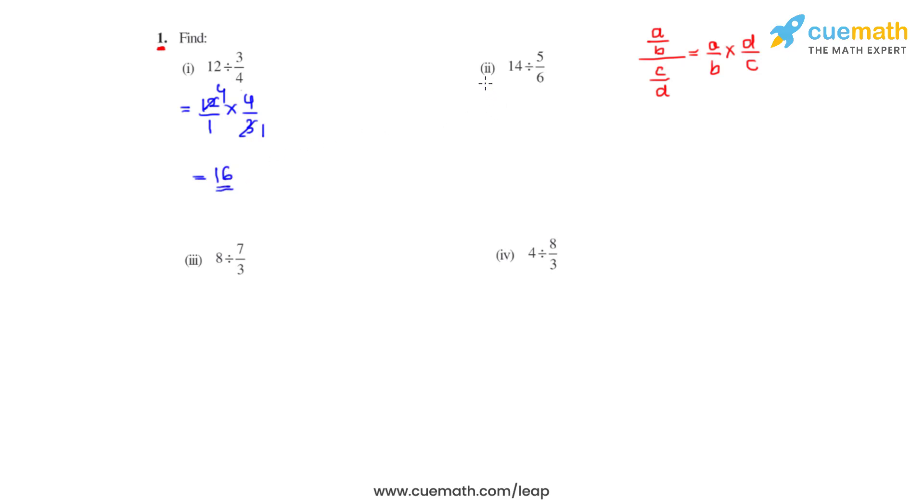Coming to the second part we have 14 divided by 5 over 6. So the reciprocal of 5 over 6 is 6 over 5. Multiplication of these two gives us the product as 84 over 5.